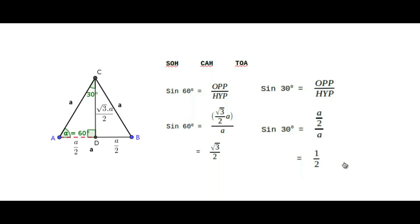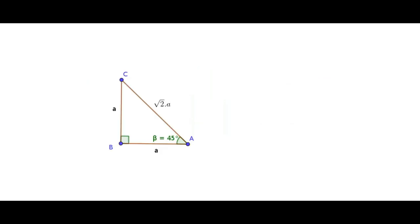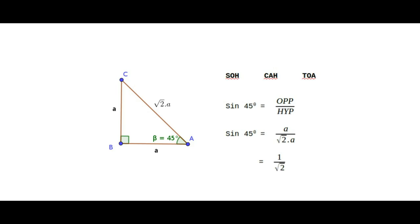Let us now find the value of sine 45 degree. For this, consider a right isosceles triangle where the lengths of the two equal sides are A and A. With the help of Pythagoras' theorem, the length of the hypotenuse is √2·A. Now take the ratio of sine 45 degree, which is opposite over hypotenuse. The opposite for 45 degrees is BC, and the hypotenuse is √2·A. The A's cancel, and the value is 1/√2.